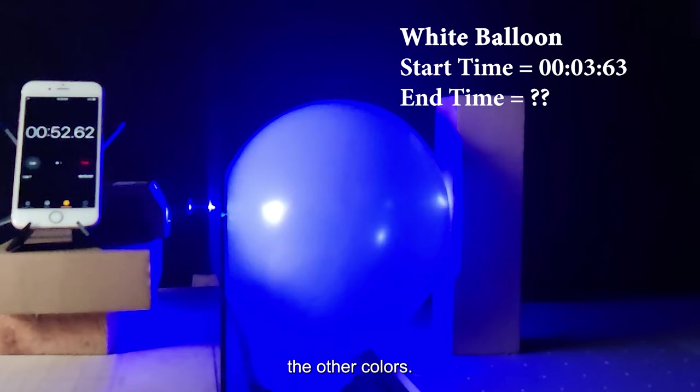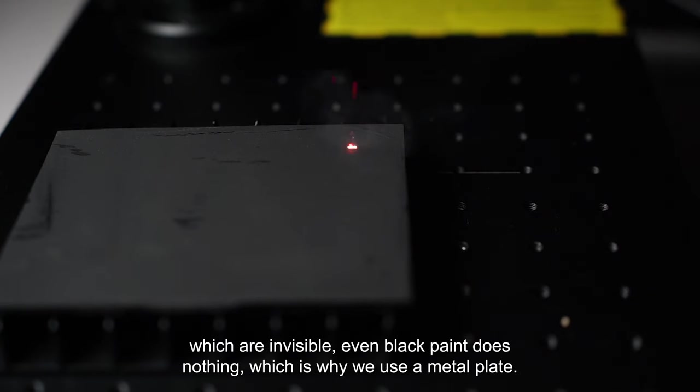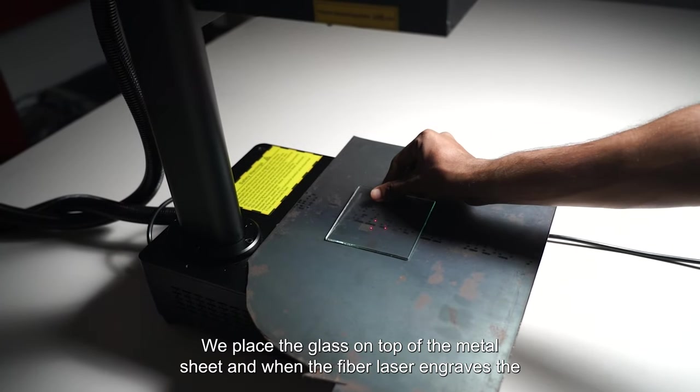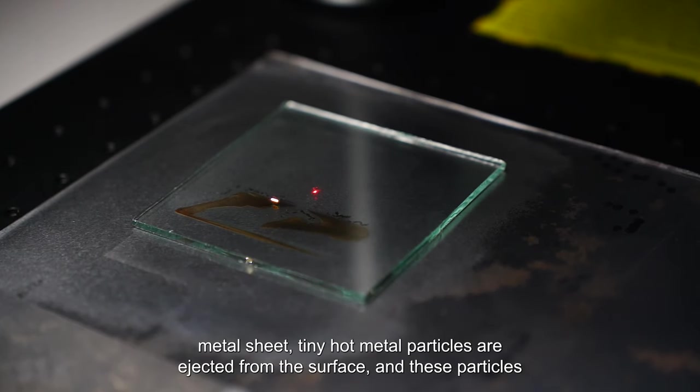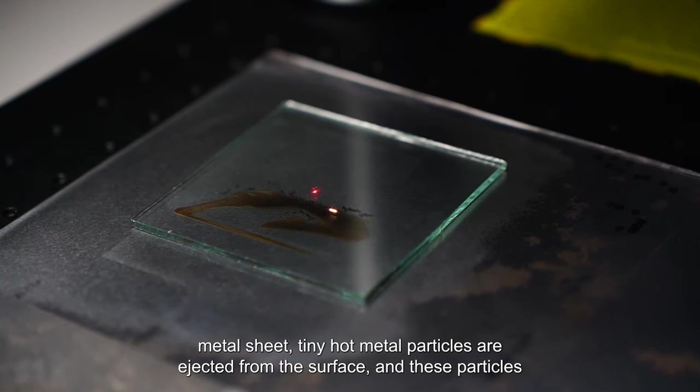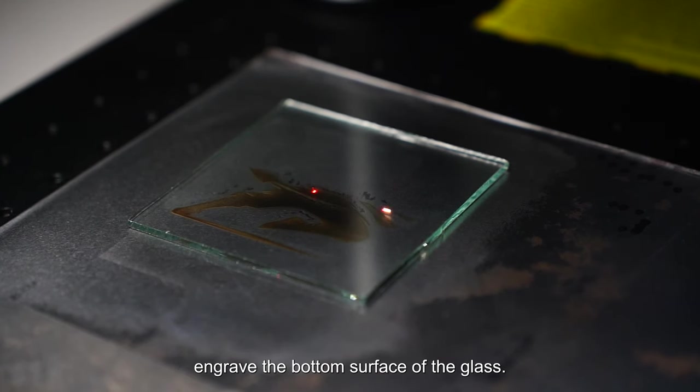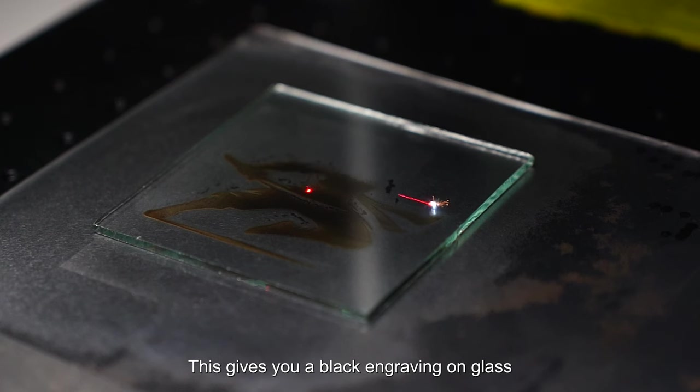In the case of fiber laser beams, which are invisible, even black paint does nothing, which is why we use a metal plate. We place the glass on top of the metal sheet, and when the fiber laser engraves the metal sheet, tiny hot metal particles are ejected from the surface and these particles engrave the bottom surface of the glass. This gives you a black engraving on glass when you engrave with a fiber laser.